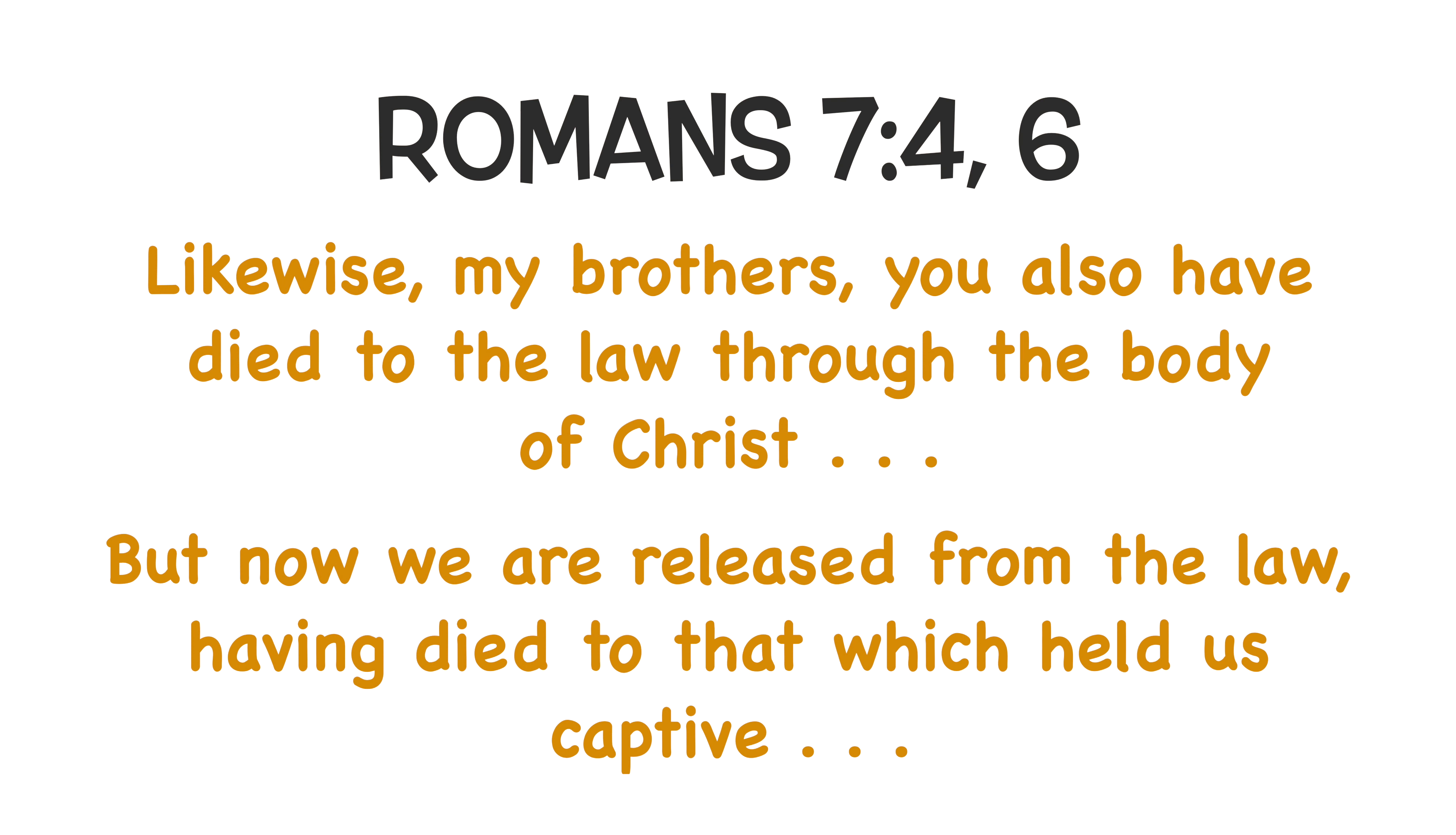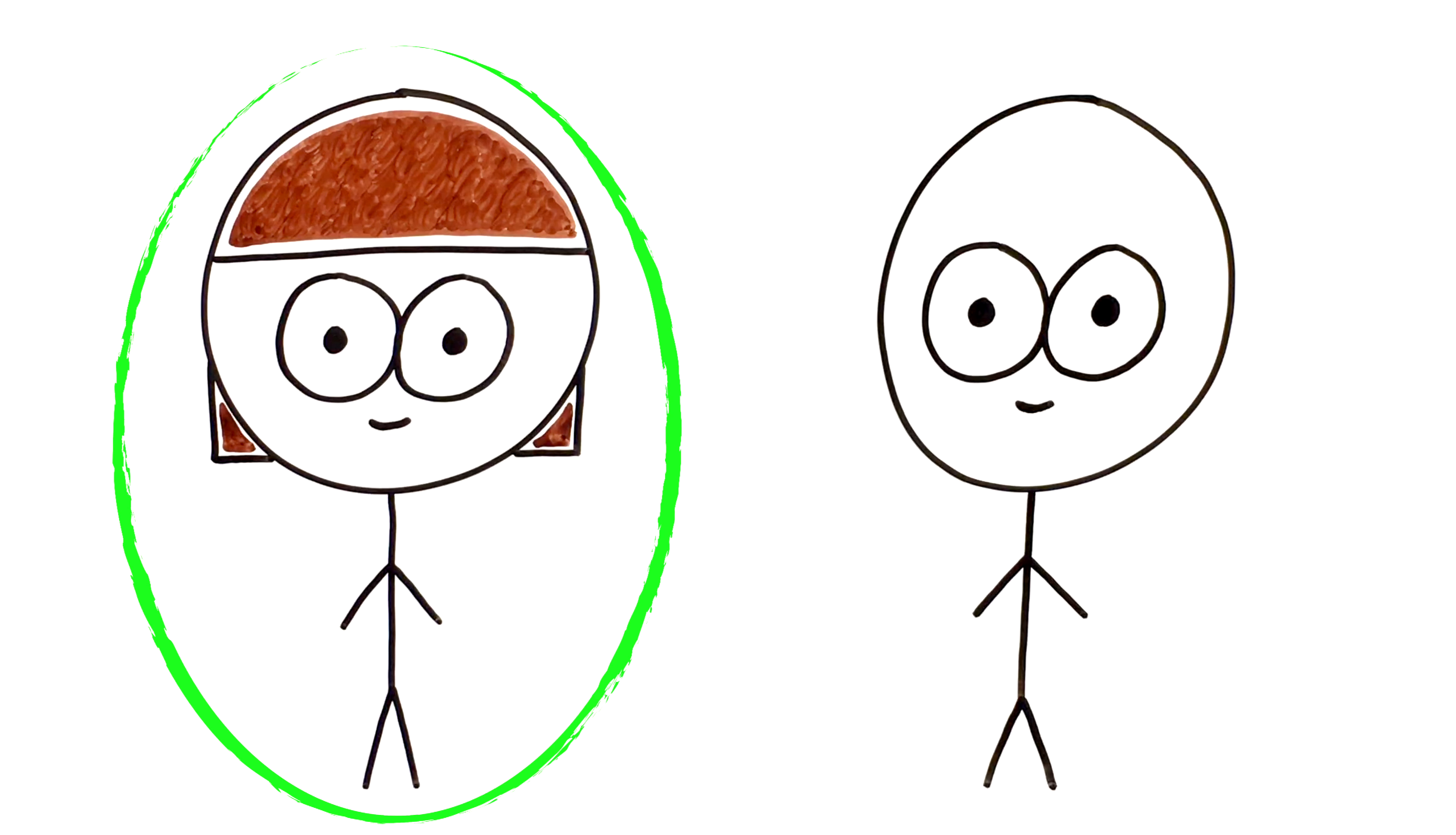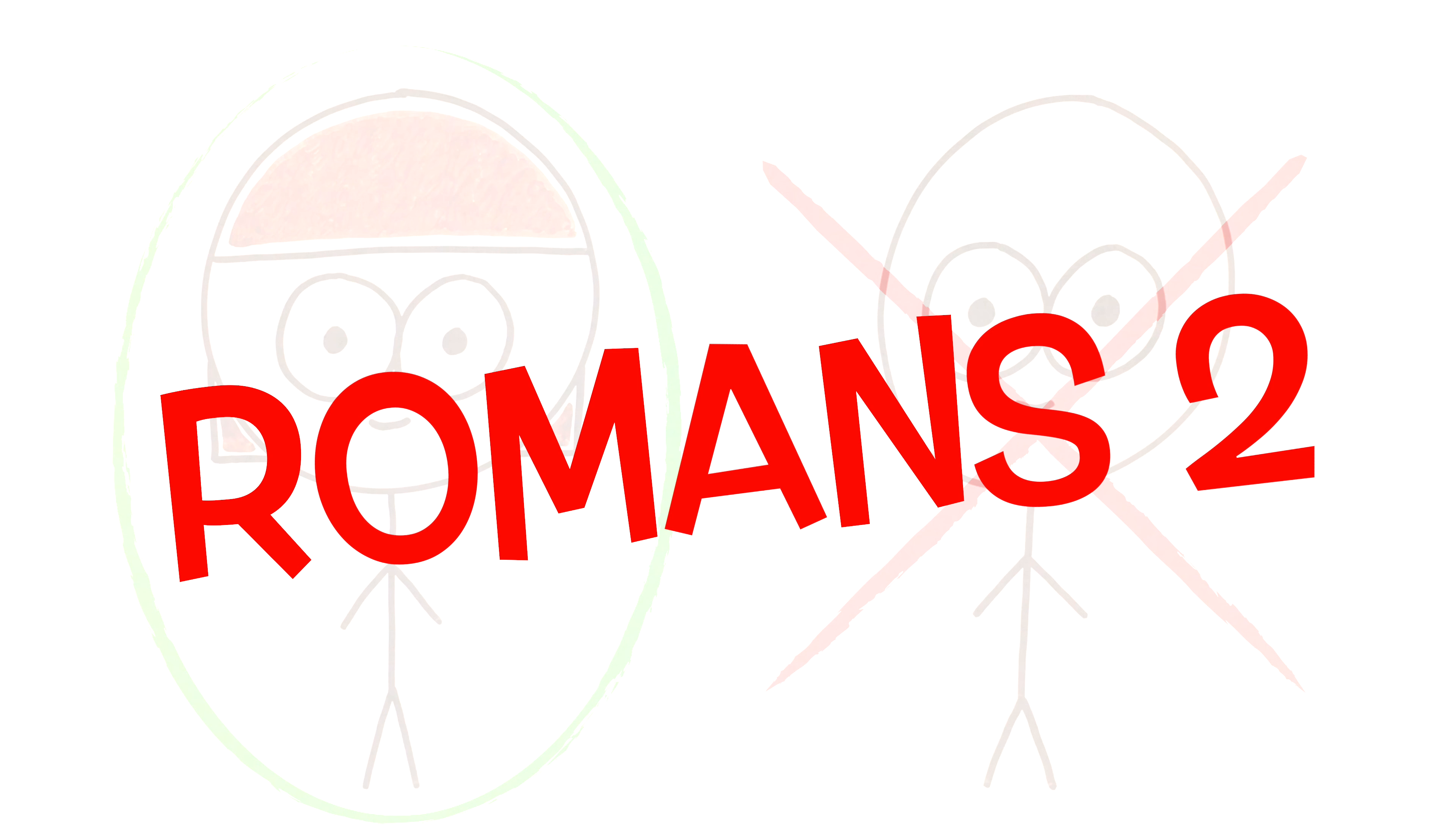But in case you're still unconvinced he's talking to Jews, Paul says in verse 4 and verse 6 that these same people who know the law and are bound to it, have died to the law and are now released from it. This has to be the Jews. It can't be the Gentiles, because the Gentiles were never bound to the law of the Old Testament and later released from it.